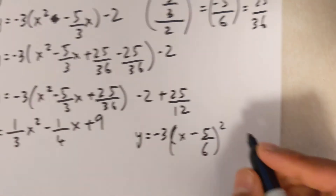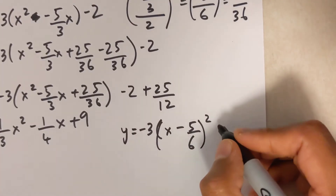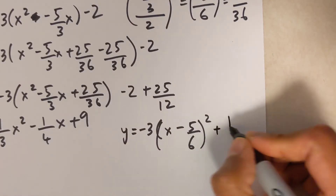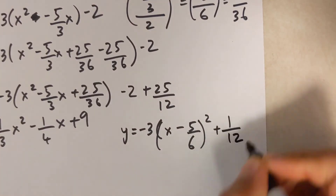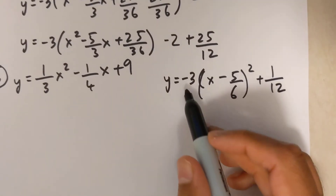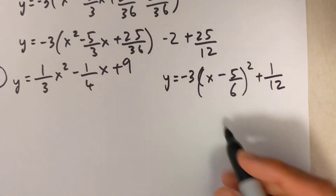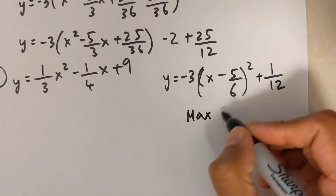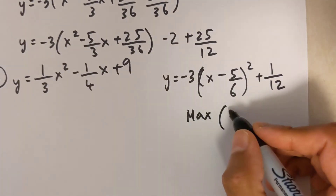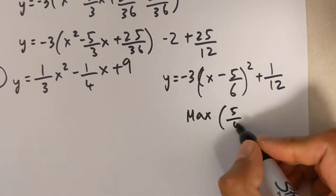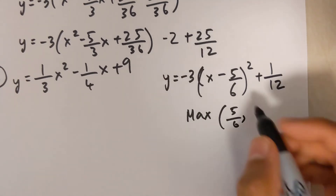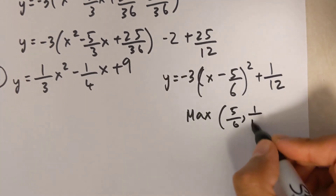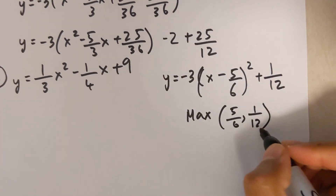So the final vertex form is negative 3 times x minus 5 over 6 squared plus 1 over 12. Since the a value is negative this is a maximum. The vertex is at x equals 5 over 6 and y equals 1 over 12.